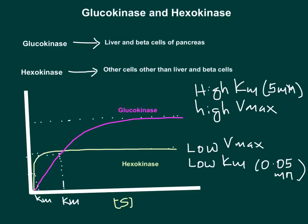Vmax indicates the capacity of the enzyme. If an enzyme has low Vmax, it saturates early — it is a low-capacity enzyme that doesn't convert much glucose to glucose-6-phosphate. Glucokinase has higher Vmax, making it a high-capacity enzyme able to convert more glucose into glucose-6-phosphate because it doesn't saturate early.